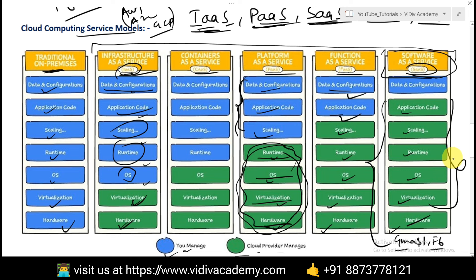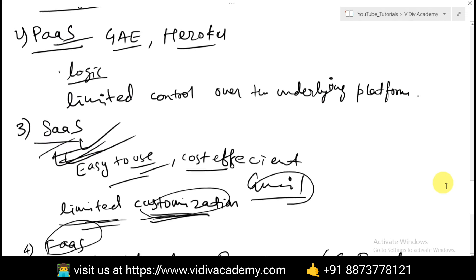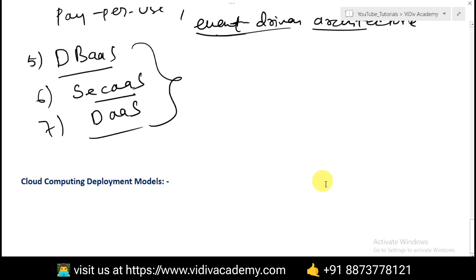Now let's talk about cloud computing deployment models, which is a very important topic. We have several deployment models: public cloud, private cloud, hybrid cloud, and multi-cloud. Let's talk about each in detail.